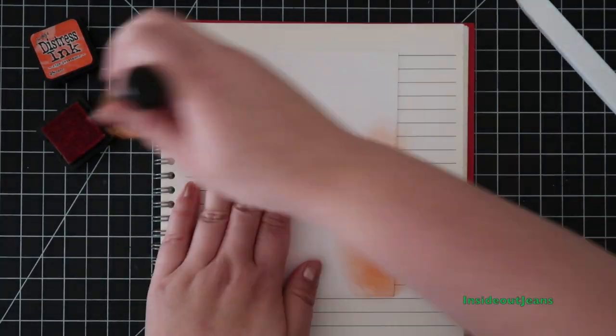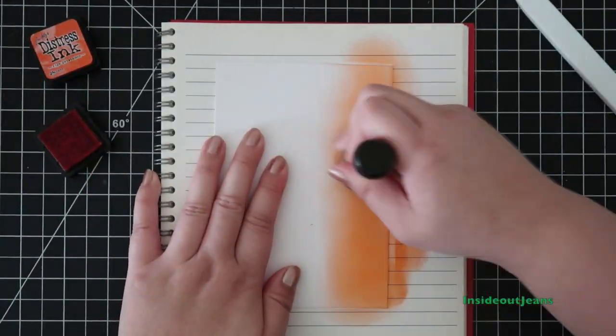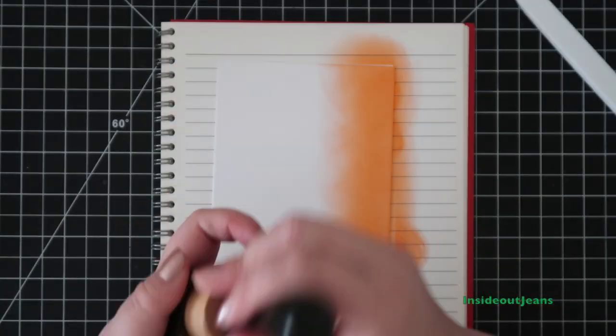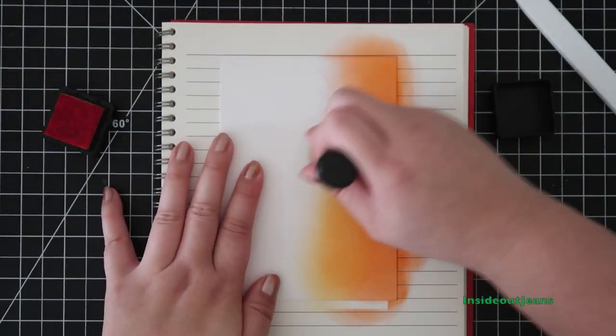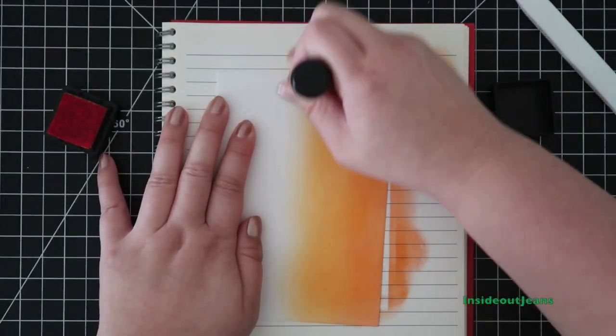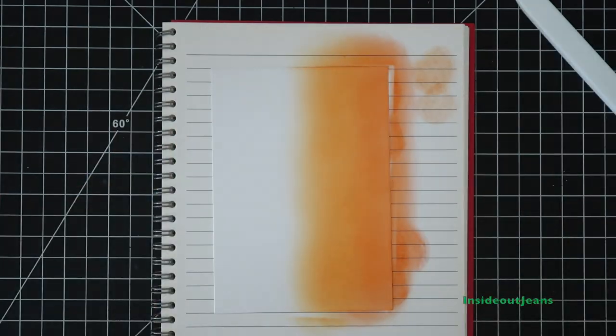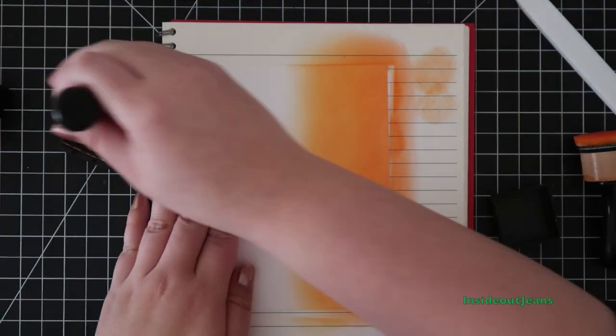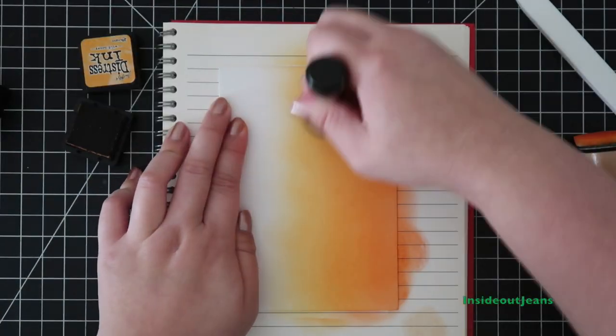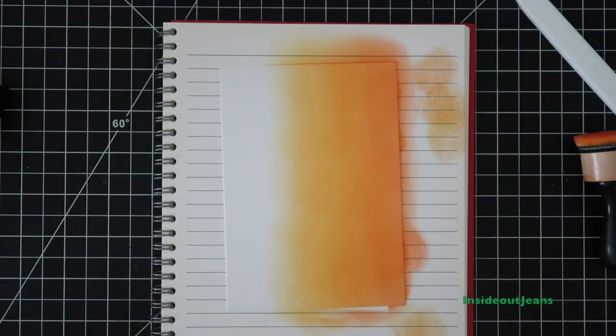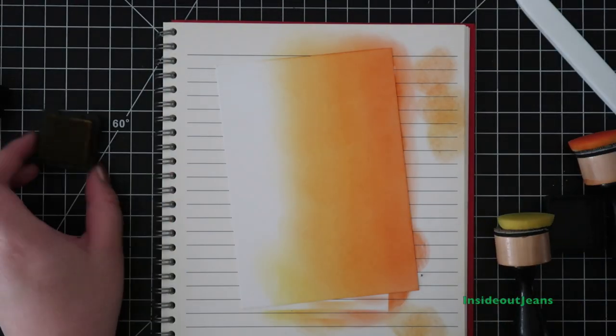I'm using a piece of Bristol Smooth cardstock for the background of the scene. Since I wanted to make it a safari theme, I wanted an orange sky so it looked like it was almost sunset. I'm using Distress inks to blend out a background and it's very simple. I'm just doing more an ombre orange to yellow effect.